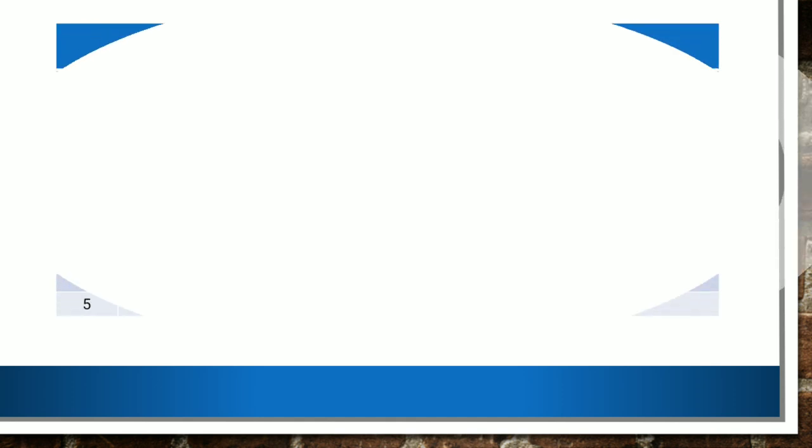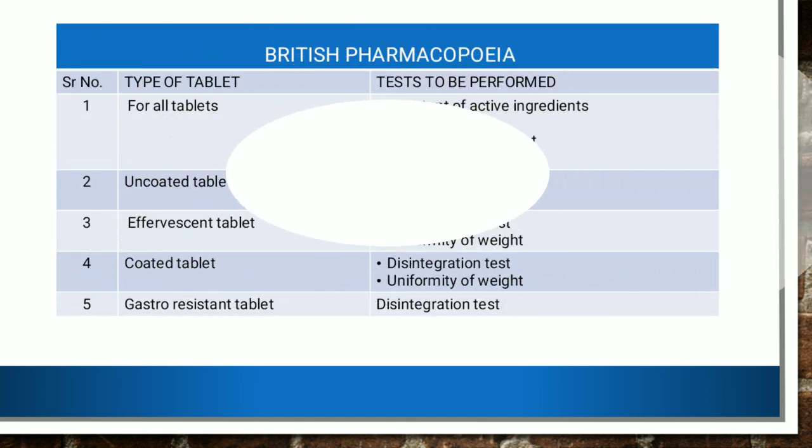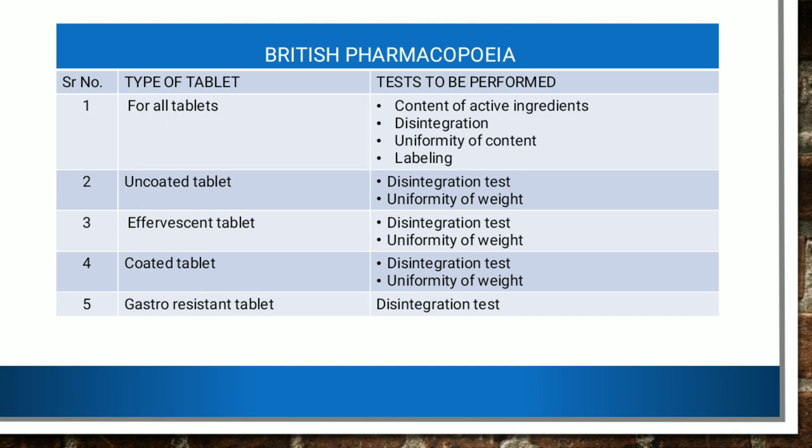Now let's talk about BP. According to British Pharmacopoeia, for all tablets, we are supposed to perform content of active ingredient, disintegration, uniformity of content, and labeling. So these are the tests that are to be performed for all tablets according to British Pharmacopoeia.